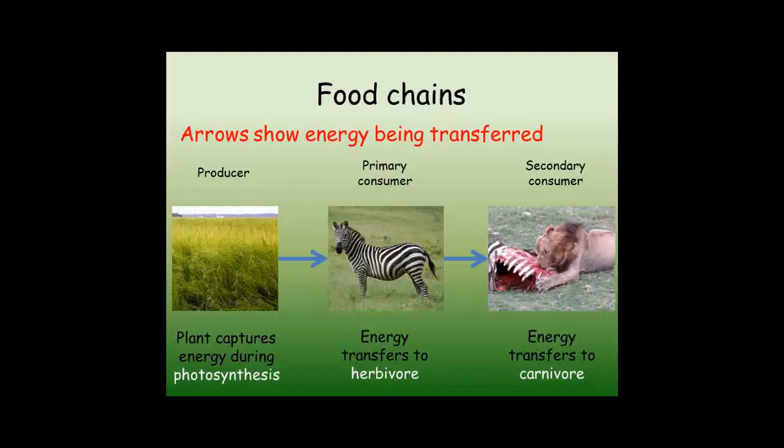The rest of the energy is transferred into less useful forms, for example by the animal moving, keeping warm, or coming out in faeces. It's this transfer of energy to less useful forms that limits the length of food chains.